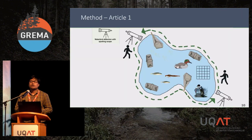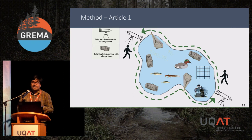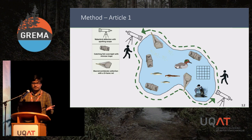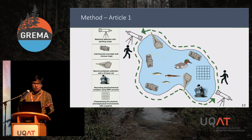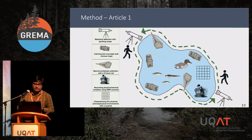For waterbirds, we used point count and flash count methods. For fish, we set three minnow traps per lake and kept the traps for 24 hours, then identified each fish species and measured them. For macroinvertebrates, we collected samples from each lake with a different net. We also measured some physicochemical and environmental variables and characterized the physical and biophysical environment for each lake.